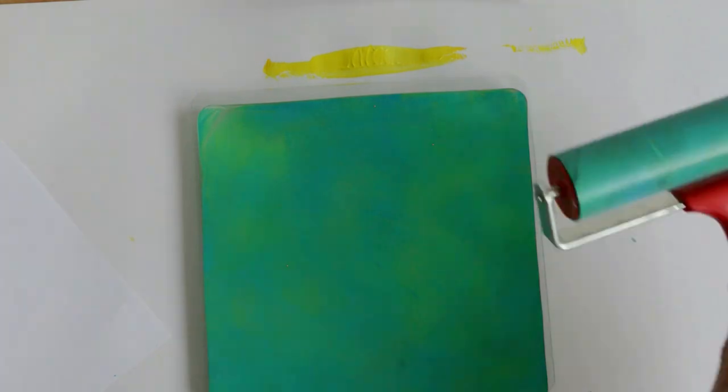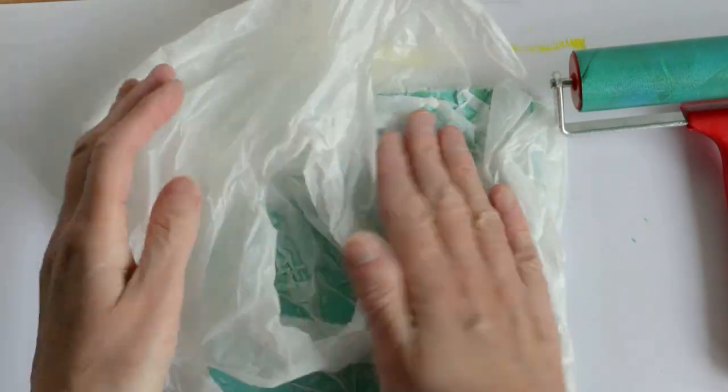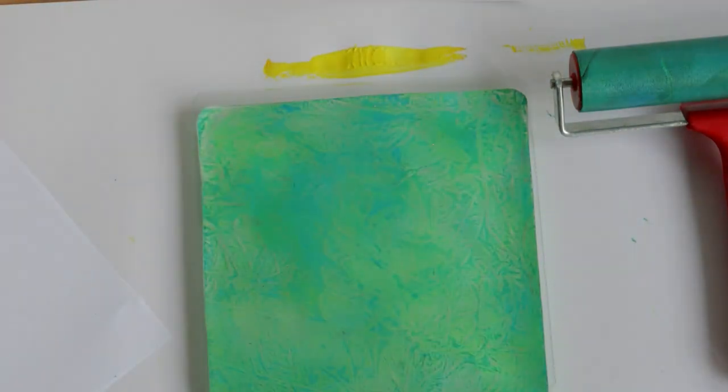One of my favorite textures is created by putting a plastic bag over the plate first before you print. I just love the random crinkled shapes it makes.